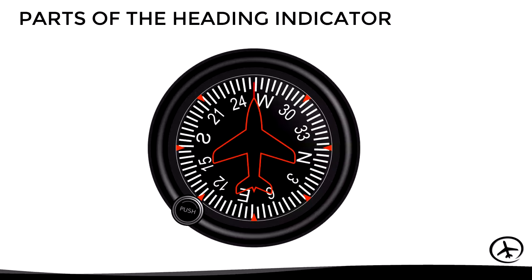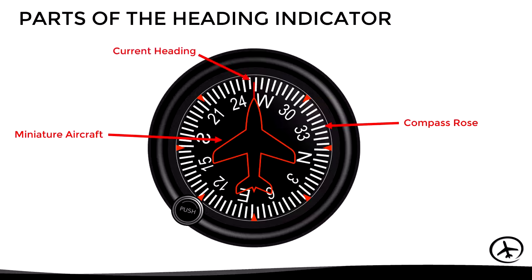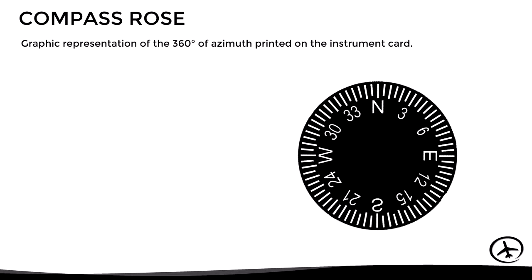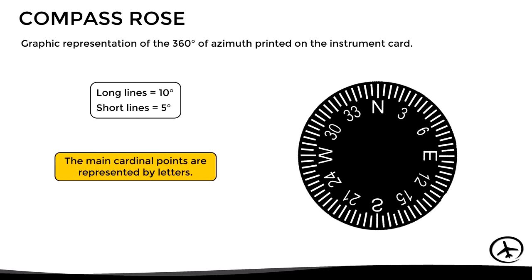Let's see the parts of the heading indicator. First, we have a compass rose in the background, then a miniature aircraft in the middle representing the orientation of the real aircraft. The line that extends in front of the aircraft represents the current heading, and in the lower left corner we have a cage and adjustment knob. A compass rose is a graphic representation of the 360 degrees of azimuth printed on the instrument card. The long lines represent increments of 10 degrees and the short ones represent increments of 5 degrees.